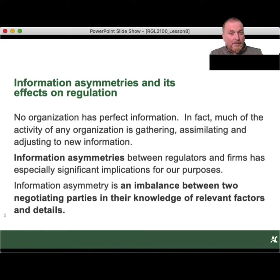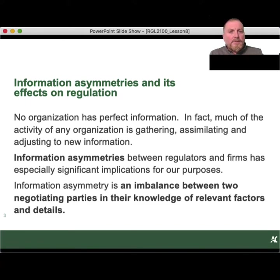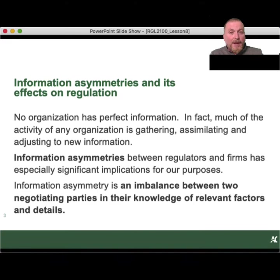It's very rare that any regulator within a government organization will ever know as much about a company or a sector being regulated as the sector itself. So there's always bound to be problems of information asymmetries between regulators and firms, and this has a significant implication for the regulatory process. Information asymmetry is an imbalance between two negotiating parties in their knowledge of the relevant factors and details. For example, when you go to buy a used car, that salesman has a lot more information about that car than you do — that's a clear example of an imbalance of power between the seller and the buyer.